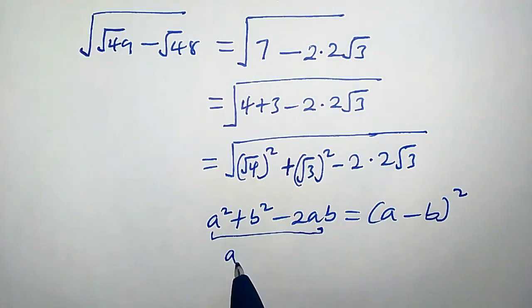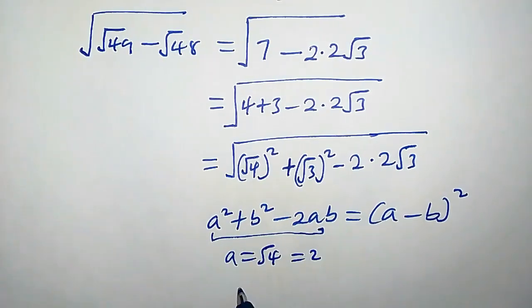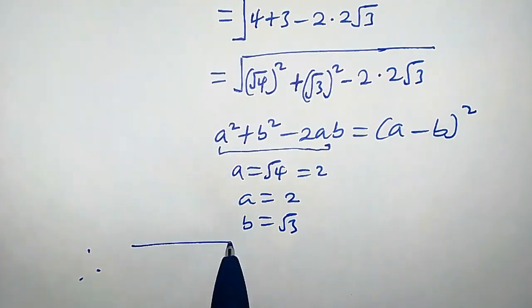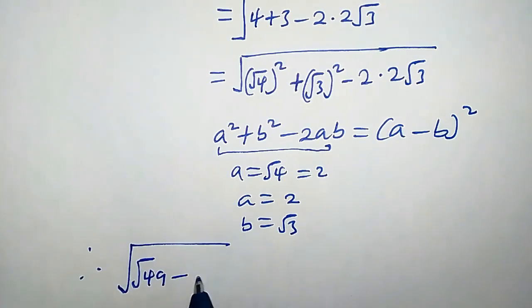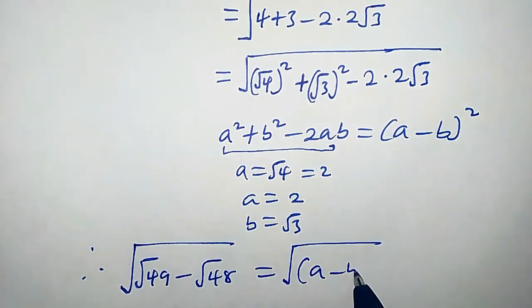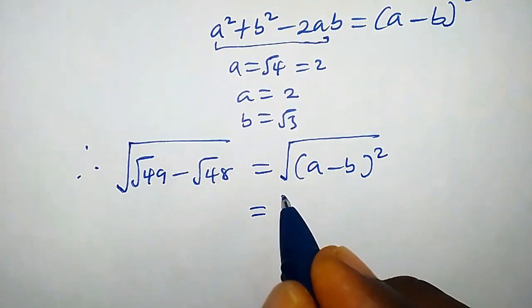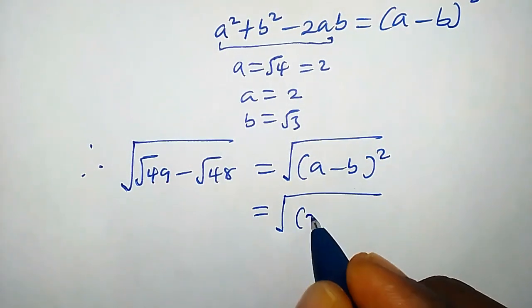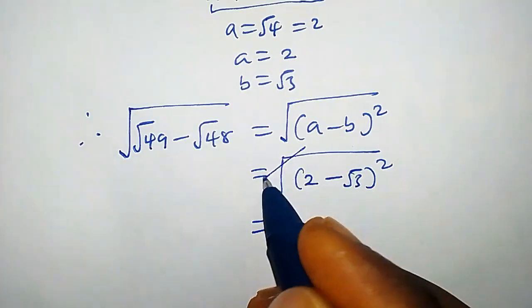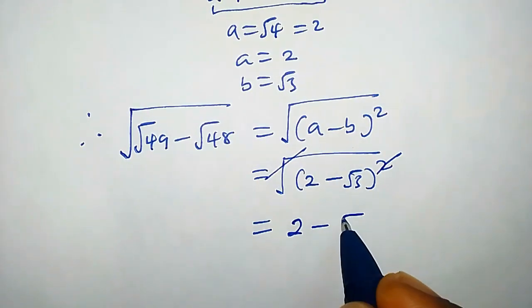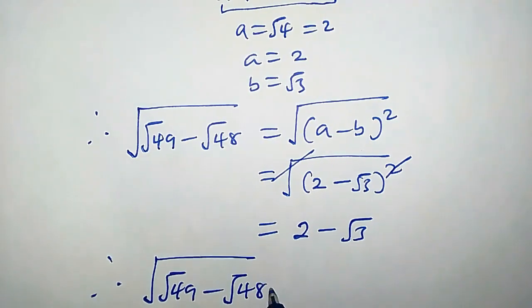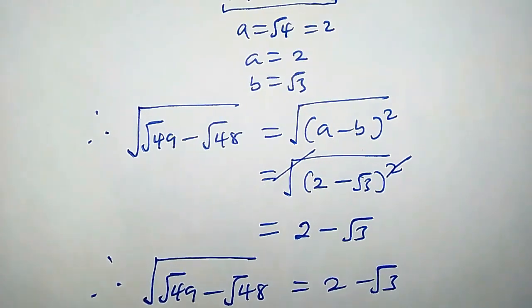By comparing, we observe that a is square root of 4 and b is square root of 3. So a equals square root of 4, which is 2, and b equals square root of 3. Therefore, square root of (square root of 49 minus square root of 48) equals square root of (a - b)², which equals a minus b — that is, 2 minus square root of 3.